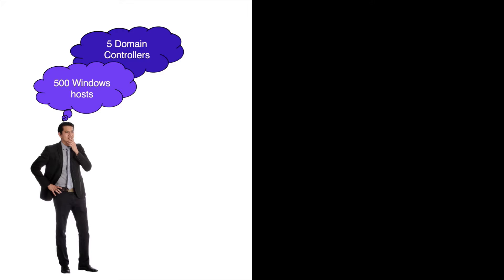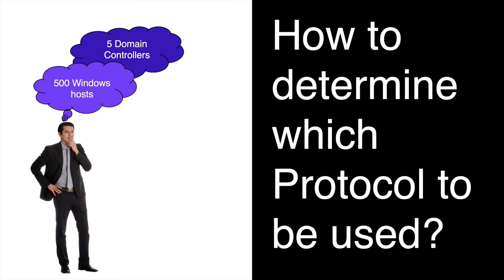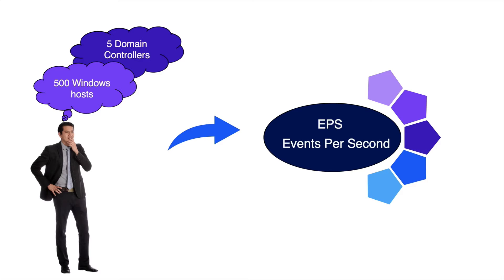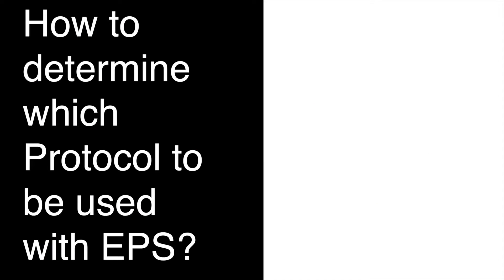Let's assume we have an admin who has 500 Windows hosts with 5 domain controllers and wants to send Windows logs to IBM QRadar. The question is which protocol is the best method for sending Windows logs. The answer lies in the EPS value, i.e., events per second to be sent to IBM QRadar. EPS will help the admin decide whether to use MSRPC or WinCollect protocol.